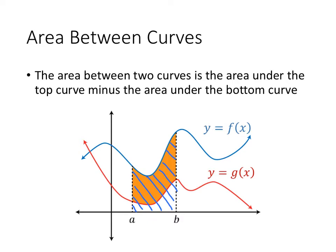But the area that we don't want is exactly the area under the curve y equals g of x. So all we need to do is find the area under the curve f of x, find the area under the curve g of x, and subtract those, and the difference will be the area that we want.